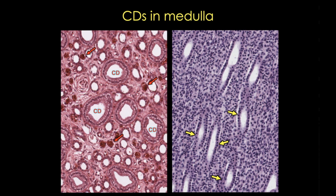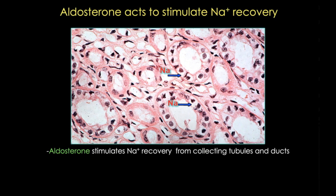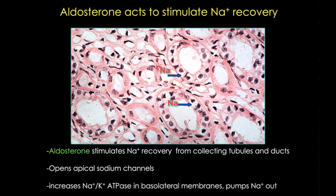Aldosterone acts to stimulate sodium recovery. It does this by opening sodium channels on the apical surface of the collecting ducts and tubules. At the same time, it increases the sodium-potassium ATPase on the basolateral membrane, allowing sodium to move from the lumen of the tubule through the epithelial cells into the interstitium and into the blood.